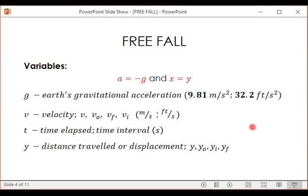So next, to introduce to you the variables of freefall. It's the same as uniformly accelerated motion, but we just changed the acceleration to negative gravitational acceleration, and then the displacement to y or height.